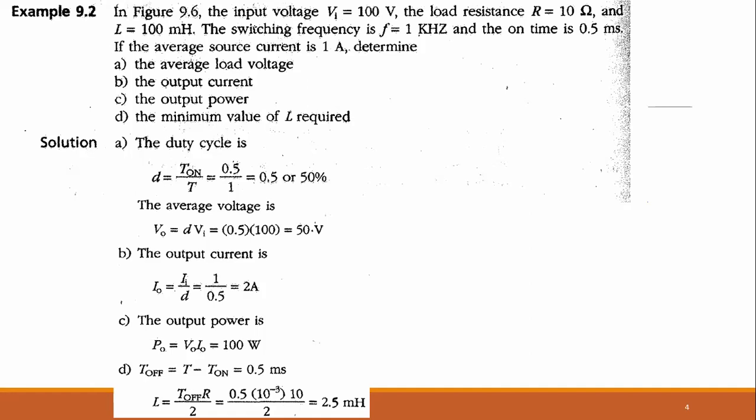For the minimum inductor value, the formula is L equals T_off times R divided by 2. We first calculate T_off: T_off equals total time minus T_on, giving 0.5 millisecond. Substituting T_off = 0.5 ms and R = 10 ohm gives L = 2.5 millihenry. This is the minimum inductance needed to eliminate output ripple.